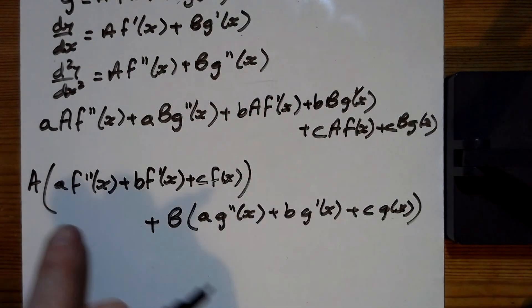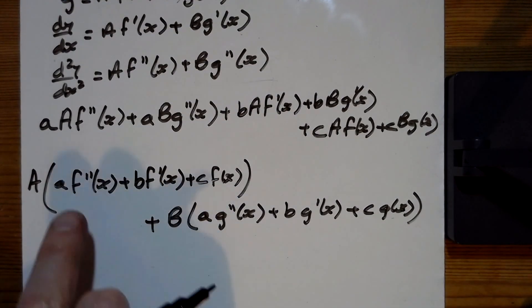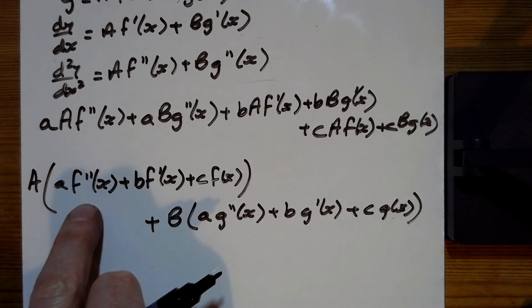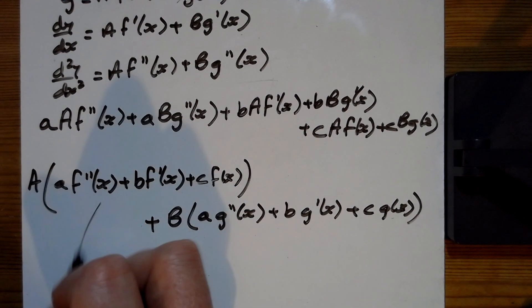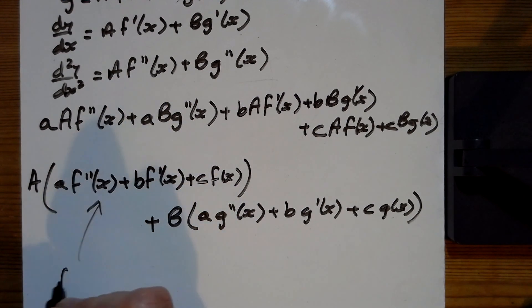So this is what it all tied us up to give. Now we know that f of x is the solution to this original second order differential equation, so when you put f of x in here, that will equal zero. So that thing there is going to equal zero because we've said it's the solution of that equation.